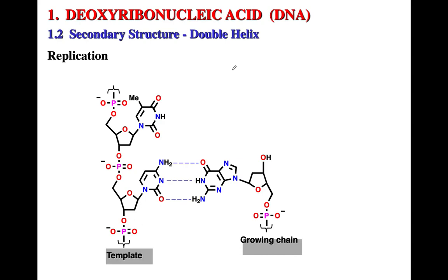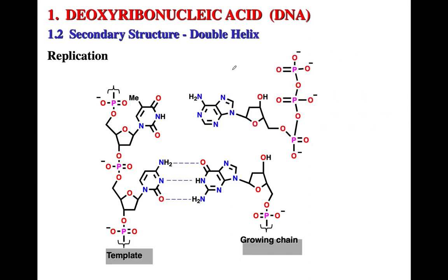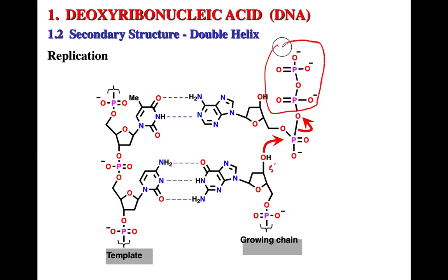Here again, you have a template and a growing chain with the incoming nucleotide. Hydrogen-bonding interaction begins between thymidine and guanosine. Then there is an attack of the hydroxyl at the three prime position of the adjacent nucleotide on the electrophilic phosphorus, leading to release of pyrophosphate and formation of a link between the three prime of the growing chain and the five prime of the incoming nucleotide.